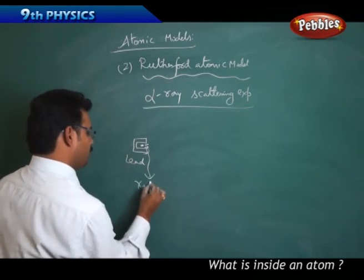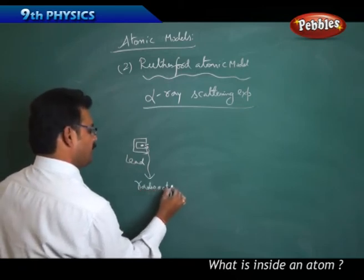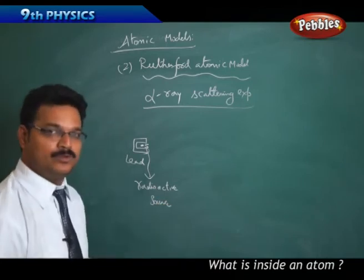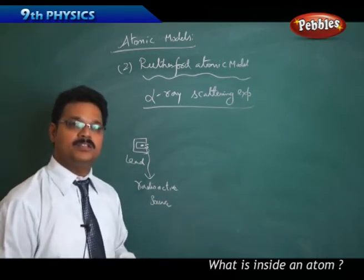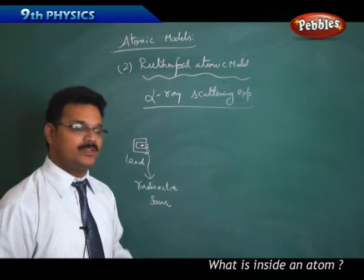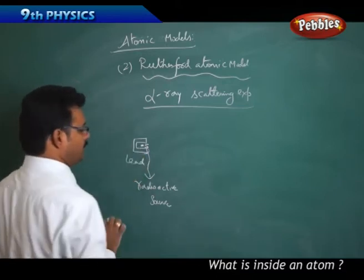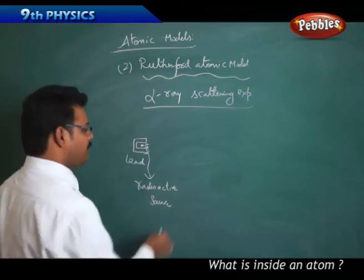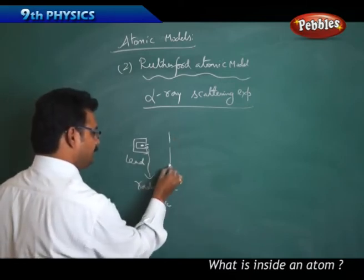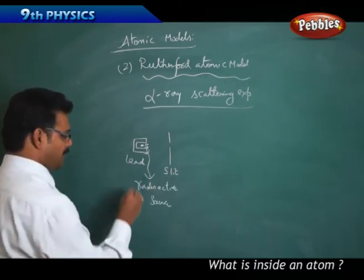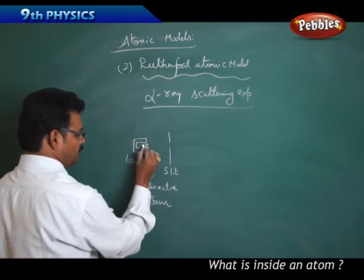Radioactive source means uranium, plutonium, thorium. All these are radioactive elements, so any radioactive element you can keep here. And there is a slit. Why we use a slit? Because from this radioactive source, many alpha particles will come in different different directions.